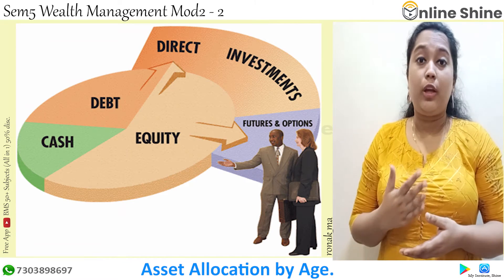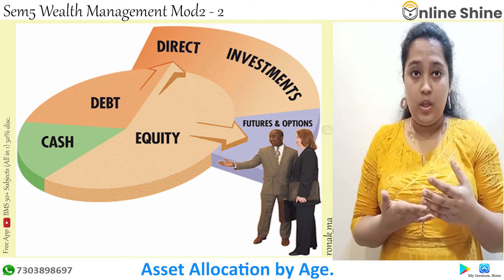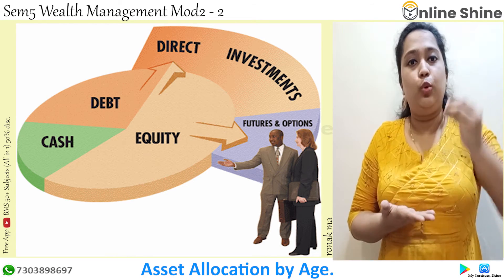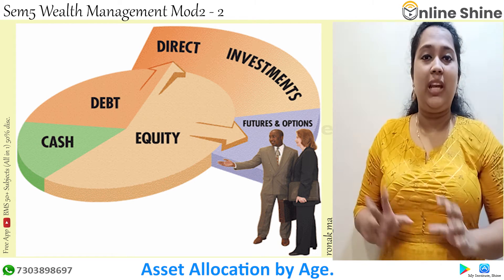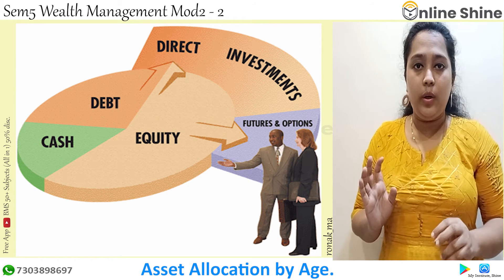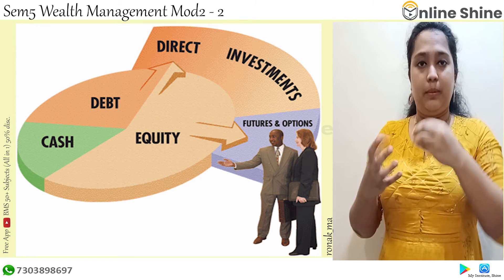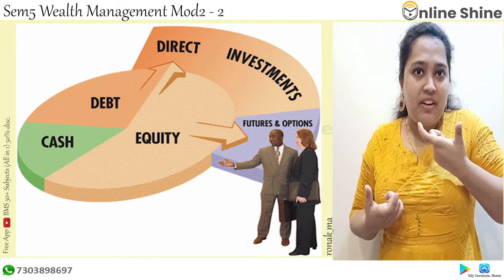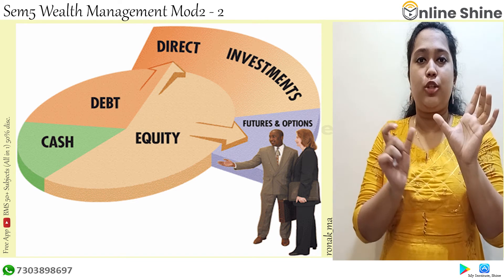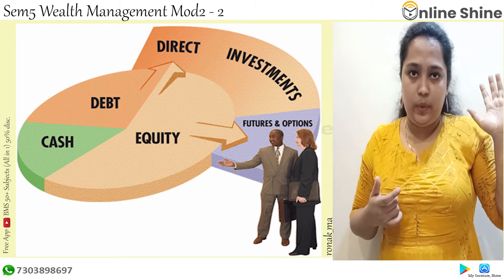The next one is asset allocation by age. There is a rule: 100 minus age. Whatever percentage comes from that, you invest that much in equity. For example, Mr. A is 25 years old. 100 minus 25 is 75, so 75% he will invest in equity and the remaining 25% in bonds.